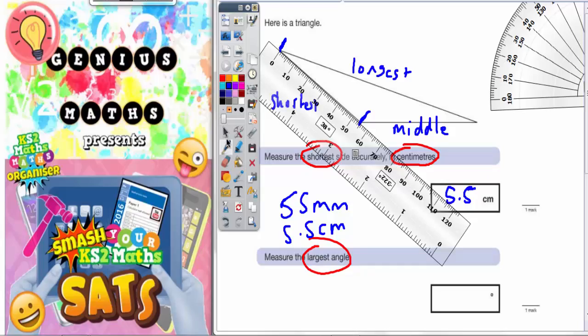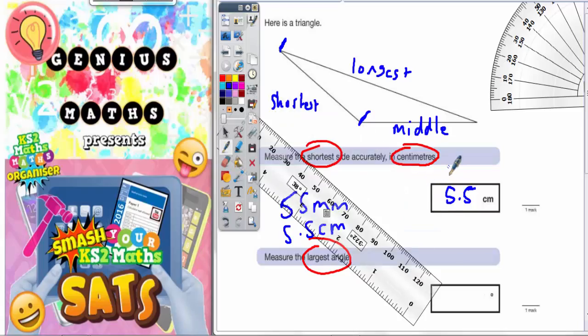Obviously you've got to be as accurate as you can. They will normally allow you one millimeter out either side. So if the true distance is 5.5 centimeters, you could probably get away with placing 5.6 centimeters or 5.4 centimeters, but any less accurate than that and you would get it marked wrong. You're allowed one millimeter either side.